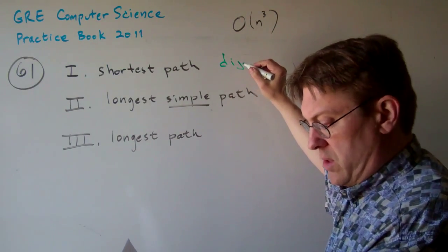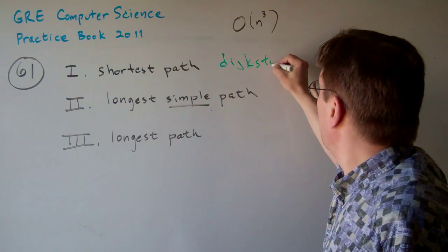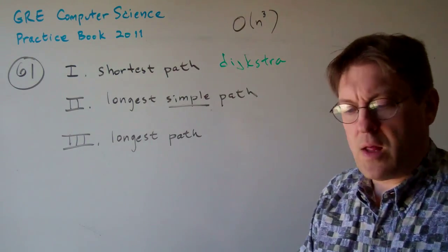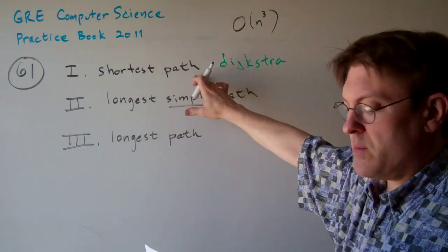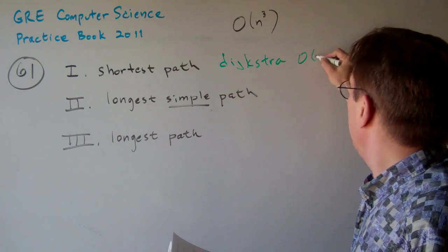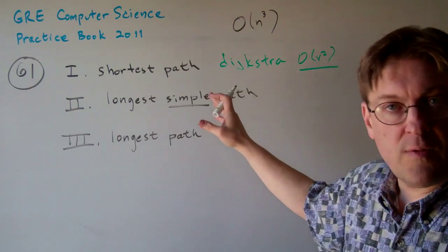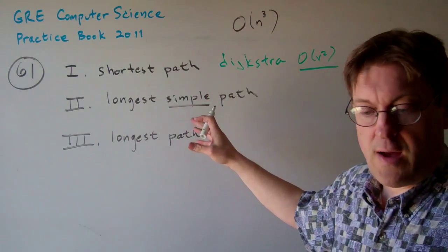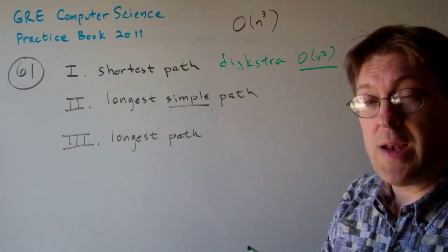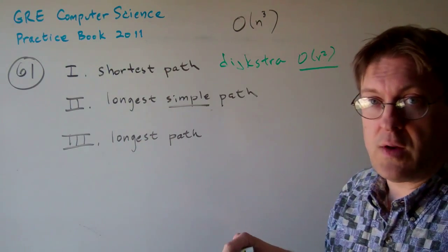Dijkstra - how do you spell Dijkstra anyway? D-I-J-A. There's many different algorithms that can find the shortest path, but this is an O of v squared proposition where v is the number of vertices in the graph, and it requires that there be non-negative cycles in that graph.